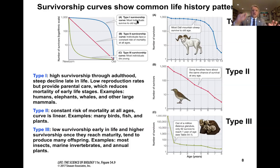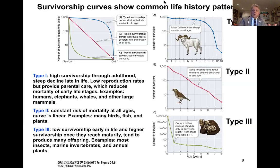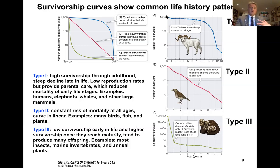Type I survivorship curve species tend to have low reproductive rates. They also provide parental care, which reduces mortality at early stages. Examples include long-lived organisms such as humans, elephants, and whales.